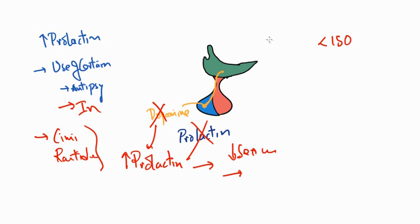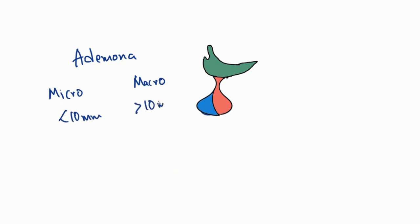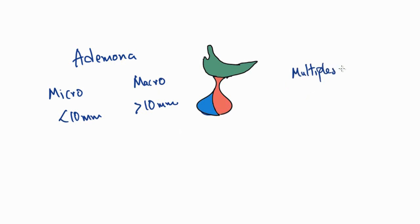Coming to pituitary adenomas — these are small benign tumors present in the pituitary region. Adenomas can be micro (less than 10 mm) or macro (greater than 10 mm). With adenomas, prolactin levels are usually increased in multiples of hundreds, with at least a five-times elevation of levels.